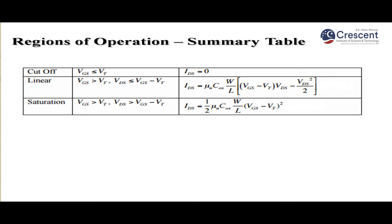In the summary table: in the cutoff region, Ids = 0. In the linear region, Ids = μn·Cox·(W/L)·[(Vgs − Vt)·Vds − Vds²/2], where μn is electron mobility, Cox is gate oxide capacitance, W and L are channel width and length. In saturation, Ids = (1/2)·μn·Cox·(W/L)·(Vgs − Vt)².